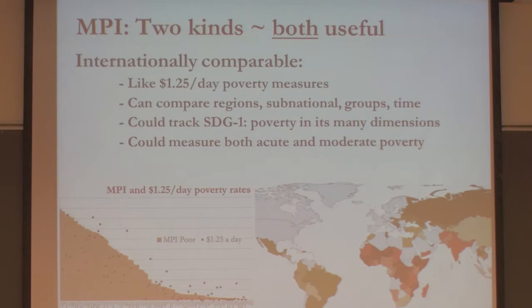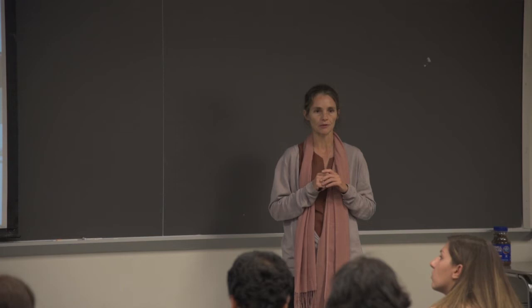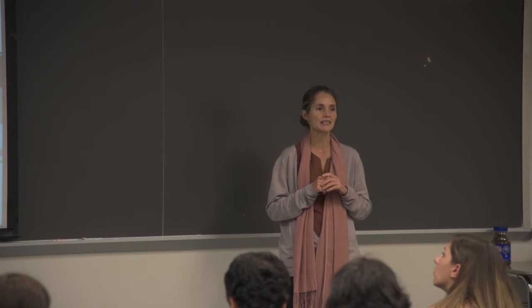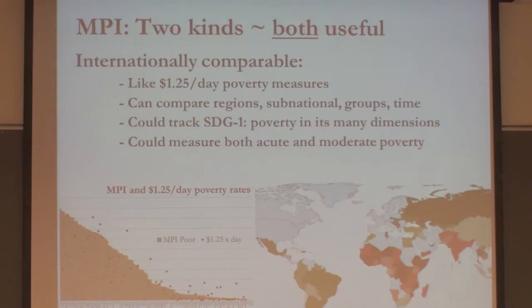There are two kinds of measures at the moment. Martin Gargi suggested on Monday $1.25 a day, and his proposals were open to relative measures. That is a comparable measure — it's comparable internationally. So $1.25 a day with PPPs is supposed to mean roughly the same thing in every country. International comparable measures are used in many of the developing goals, and they enable countries to compare how fast they are progressing versus other countries.